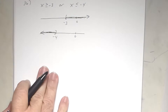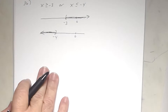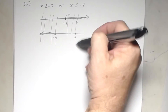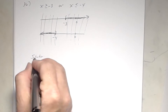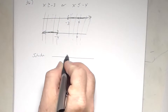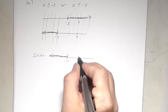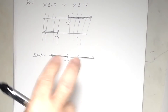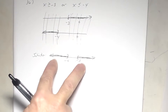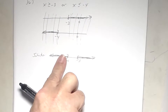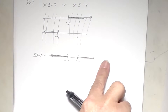This is an 'or' statement, so anything shaded is a solution. Note: if this were an 'and' statement, there would be no solution because the graphs don't overlap. But since it's 'or,' you shade everything from negative infinity to negative four, and also from negative three to infinity.